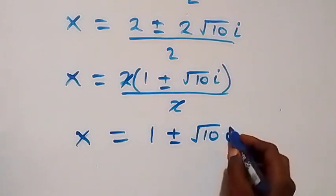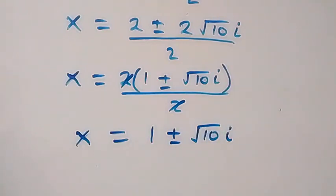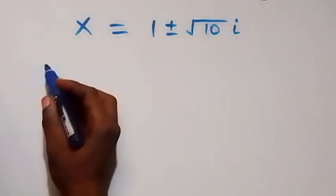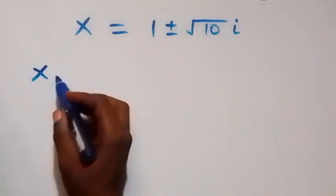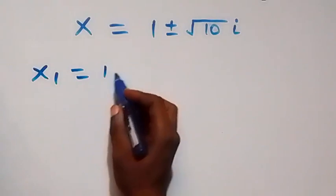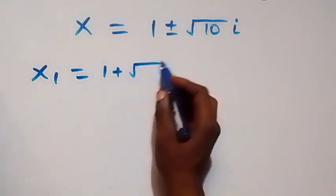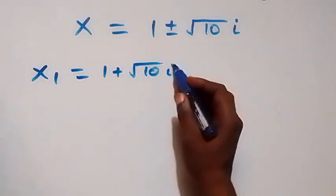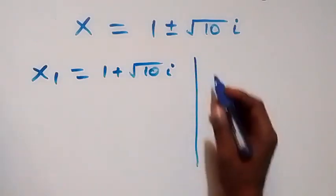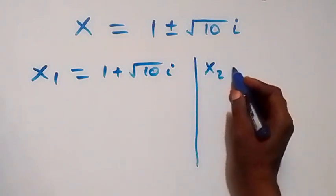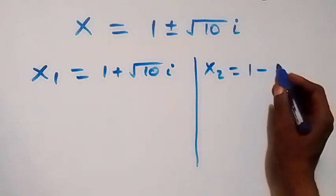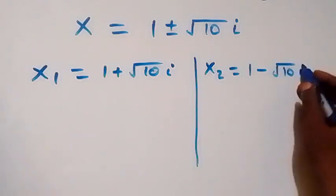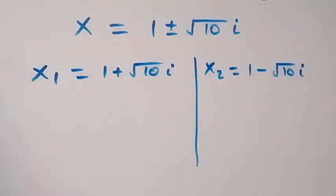So x equals to 1 plus or minus root 10 i. We have two values: x1 equals to 1 plus root 10 i, and x2 equals to 1 minus root 10 i.